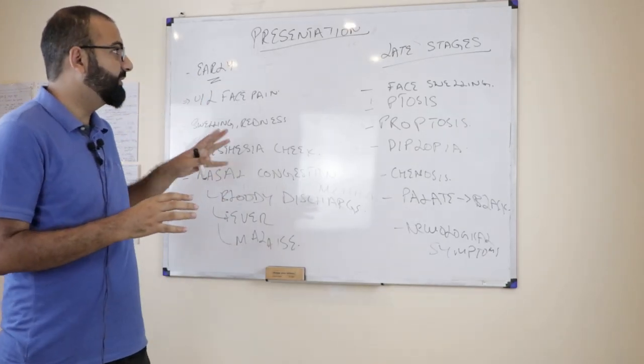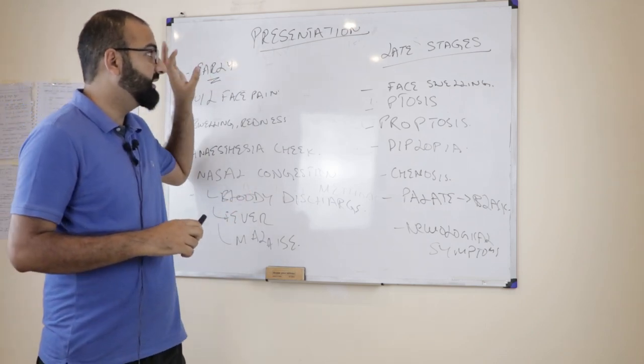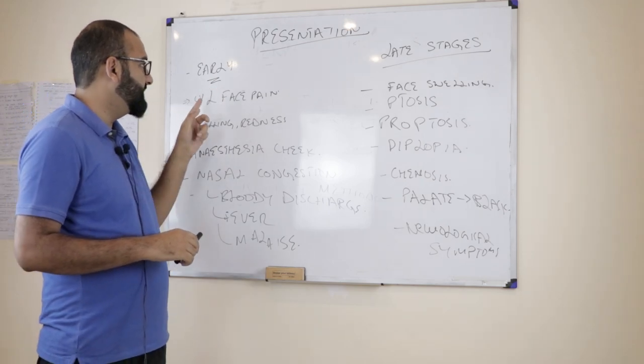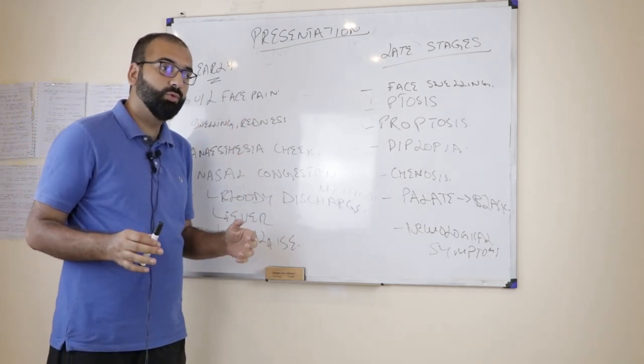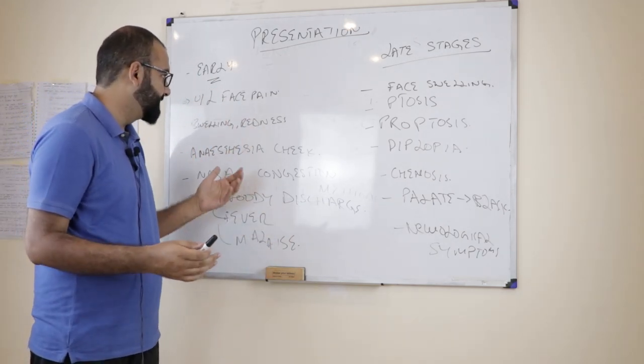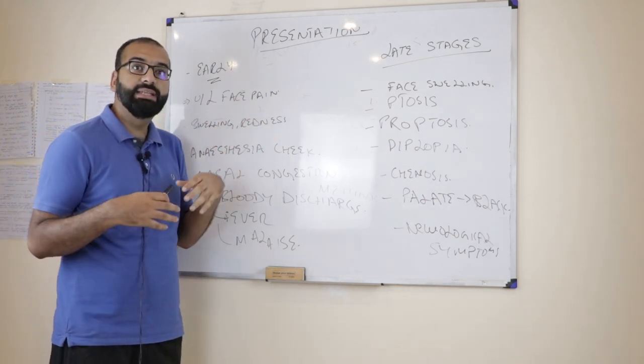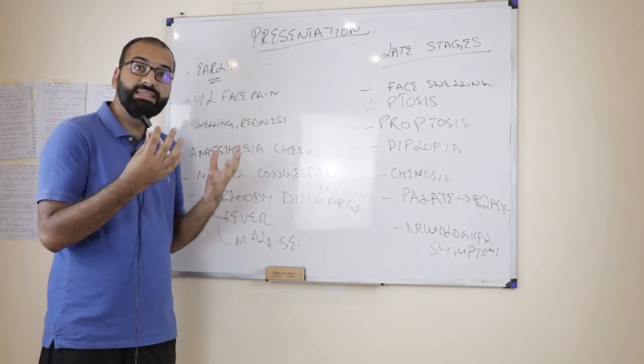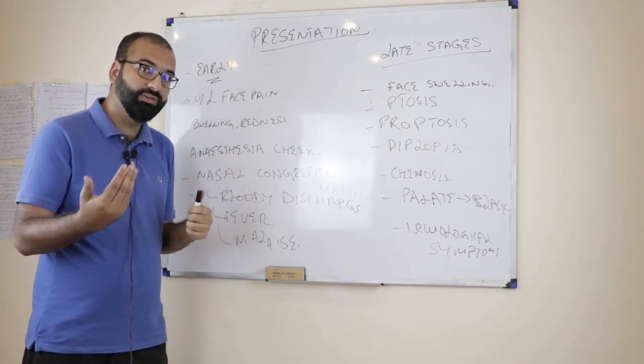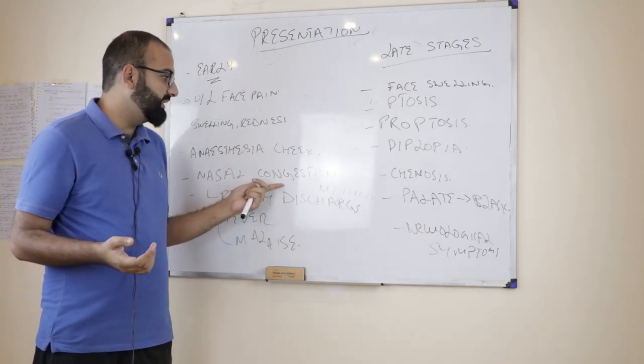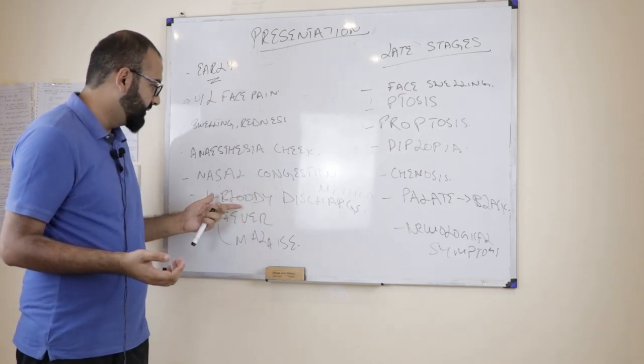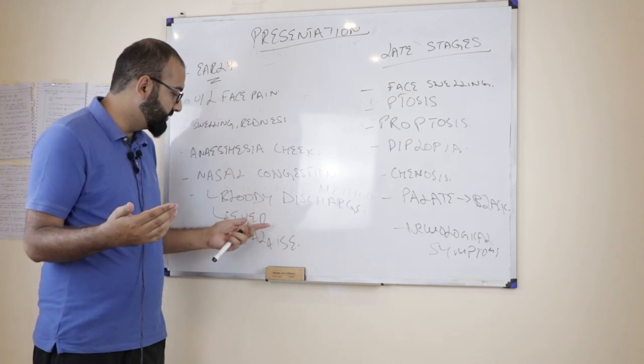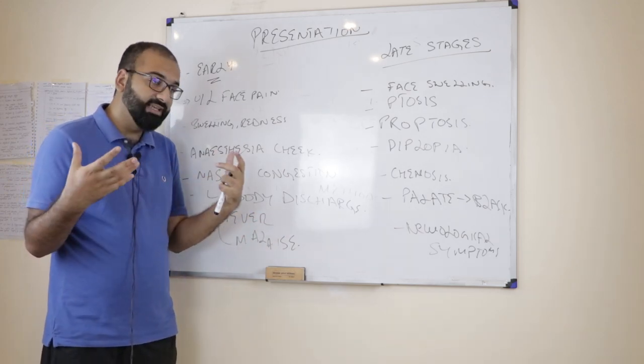Now we come to the different presentation. There can be an early stage and then there can be a later stage. In the early stage, the patient can present to you with unilateral facial pain, swelling and redness over the face. The patient can also present to you with anesthesia of the cheek. The patient will be unable to feel their cheek. Then there can be nasal congestion of the patient which can also involve bloody discharge coming out from the nose, fever and a general sense of malaise.